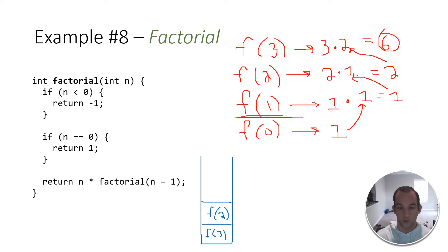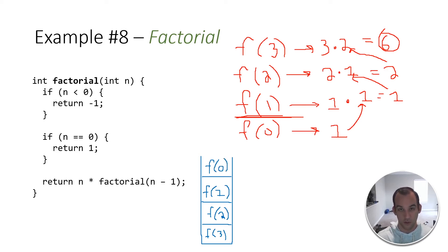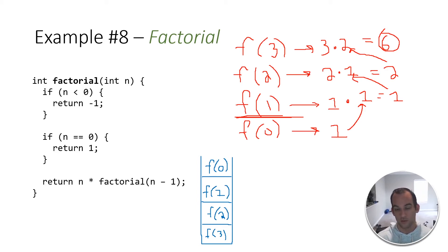Then we do the same thing — we call return two times factorial of two minus one, which is factorial of one. So we push f of one. And then we have factorial of zero, which we push on here even though we're not calling factorial recursively again — it's still an activation record. When we push this onto the stack and go through it, we see it hit a base case: if n equals zero, return one. That means we're done pushing onto the activation stack, and immediately we start popping things off.